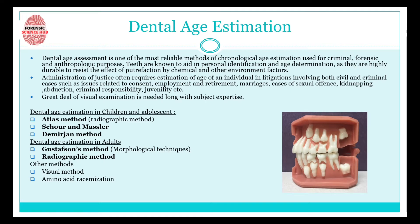Dental age assessment is one of the most reliable methods of chronological age estimation, used for criminal, forensic, and anthropologic purposes. Teeth are known to aid in personal identification and age determination, as they are highly durable and resist the effects of putrefaction by chemical and other environmental factors. Teeth can help us know the age of a person even after death, because teeth are highly mineralized, making them very durable.